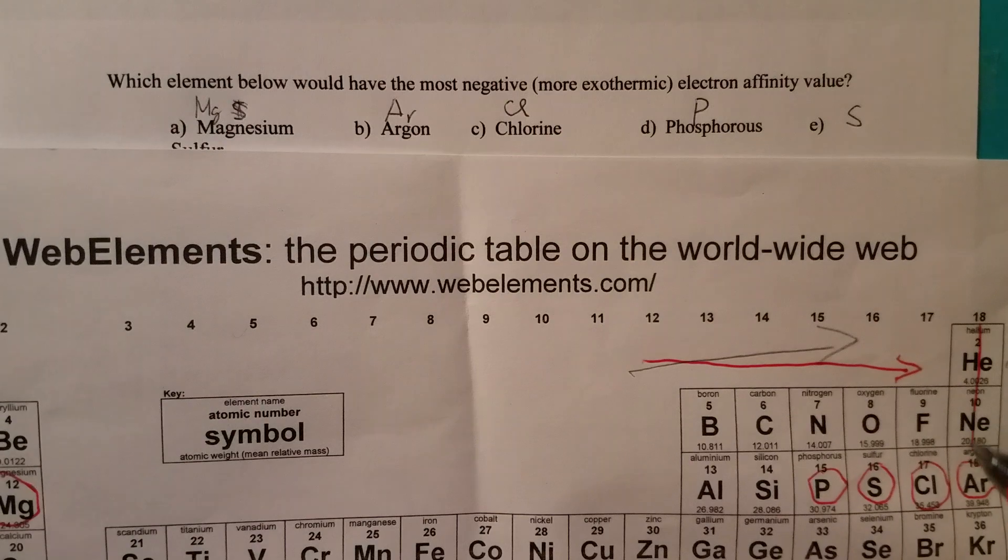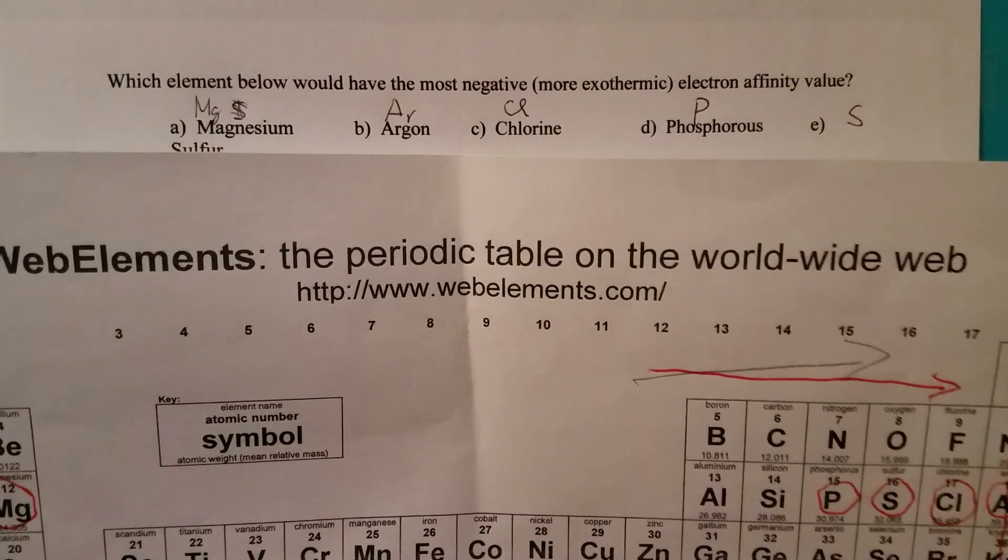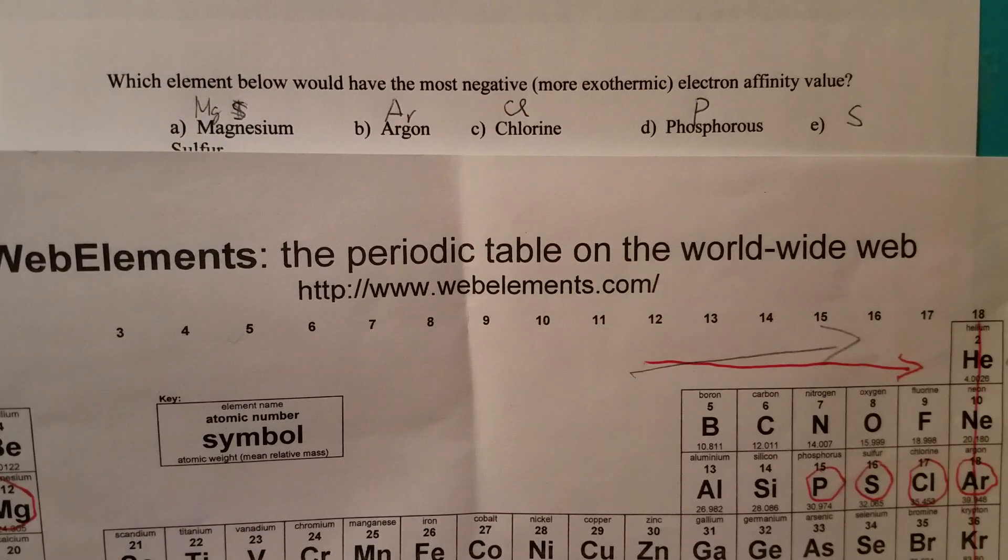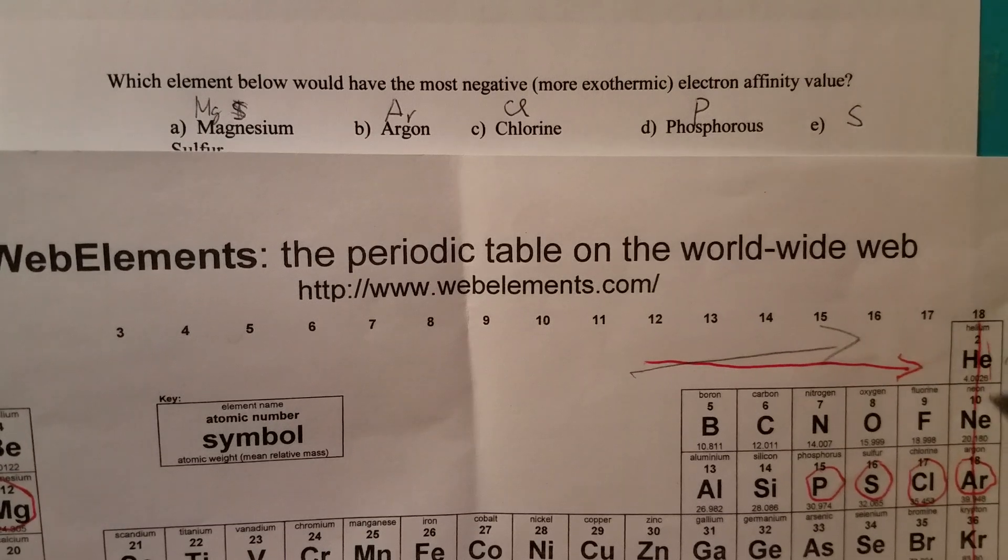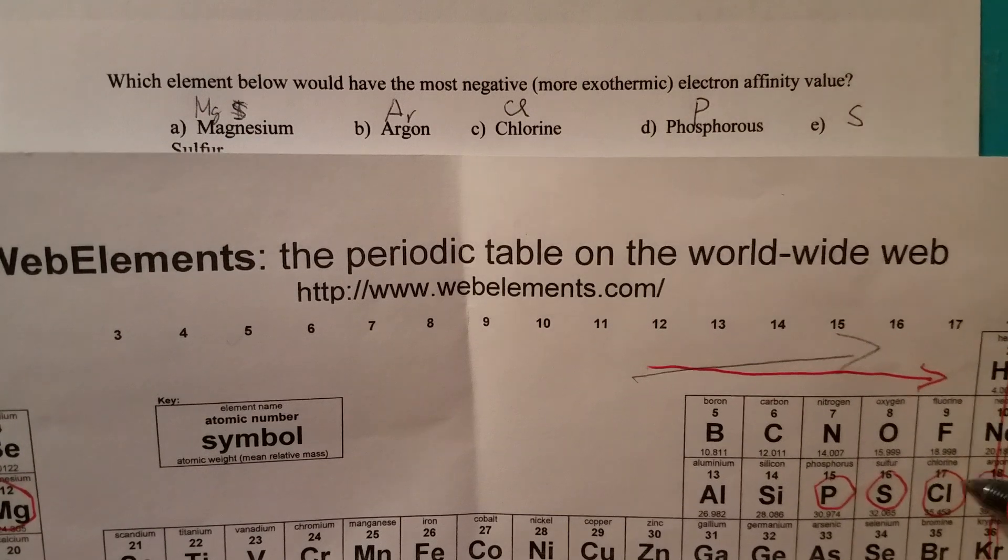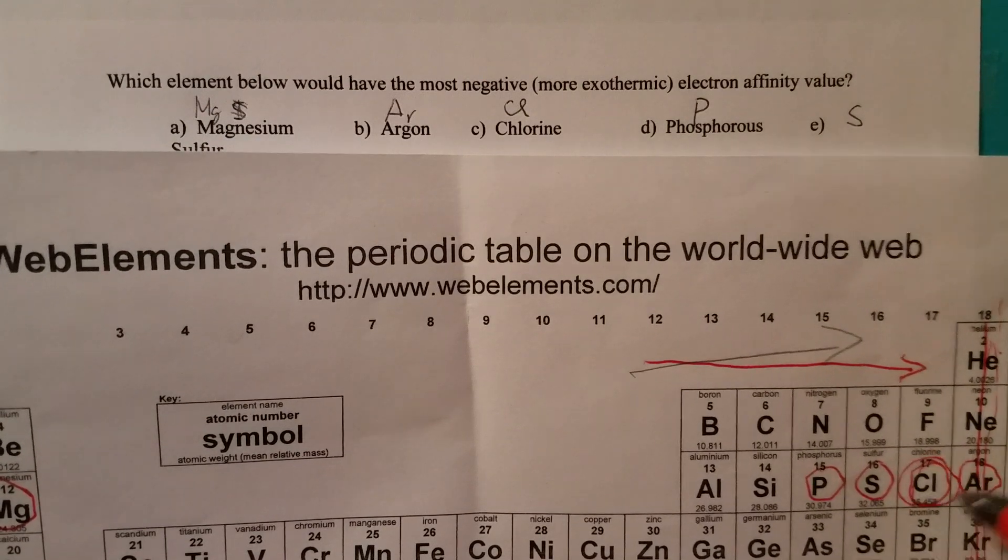No. Remember the noble gases are very stable. So when we work on electron negativity or negative electron affinity, we don't even consider them. They have very low values. Therefore the correct answer should be chlorine.